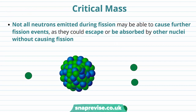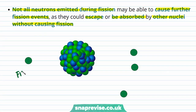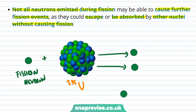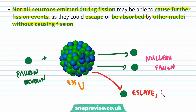Now we're going to learn about critical mass. Not all neutrons emitted during fission may be able to cause further fission events, because they could escape or be absorbed by other nuclei without causing fission. For example, a fission neutron may interact with uranium-235 causing fission and producing three neutrons, but two might cause further fission while the third escapes or is absorbed without causing fission.